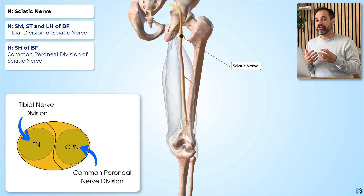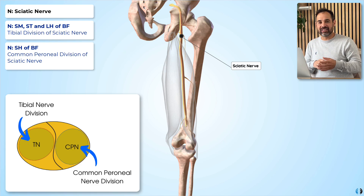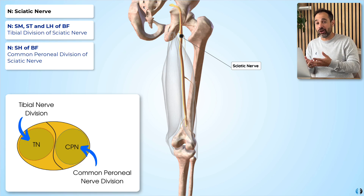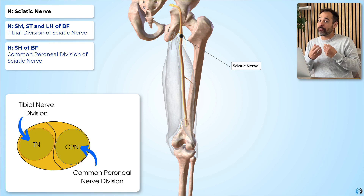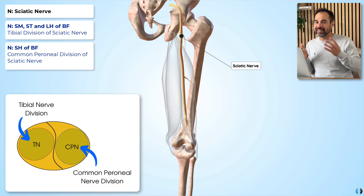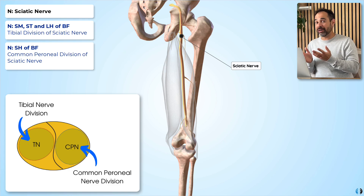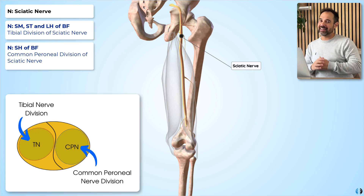That is why the terms 'tibial division of sciatic nerve' and 'common peroneal division of sciatic nerve' exist — because the sciatic nerve effectively just houses these two nerves. Therefore, whilst textbooks describe semimembranosus, semitendinosus, and the long head as innervated by the tibial division, and the short head by the common peroneal division, it is totally acceptable to say all three muscles are innervated by the sciatic nerve.